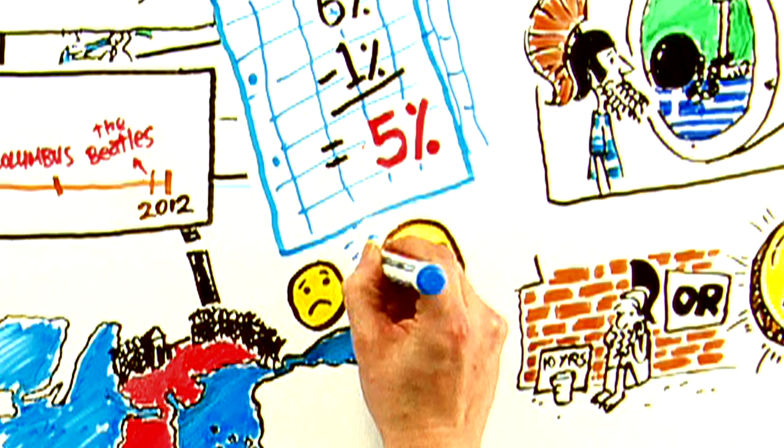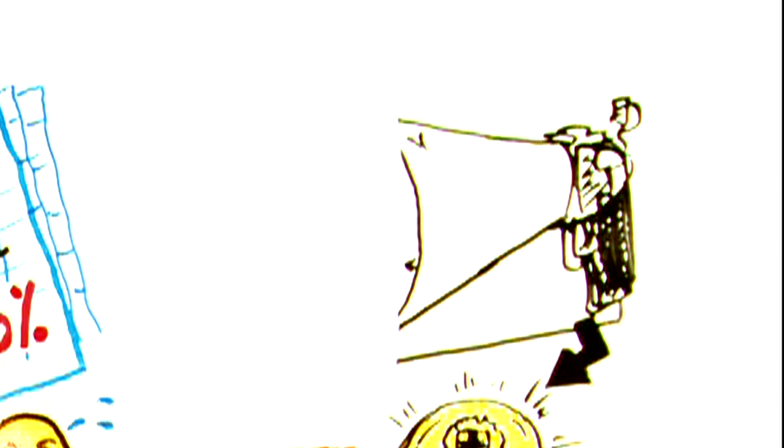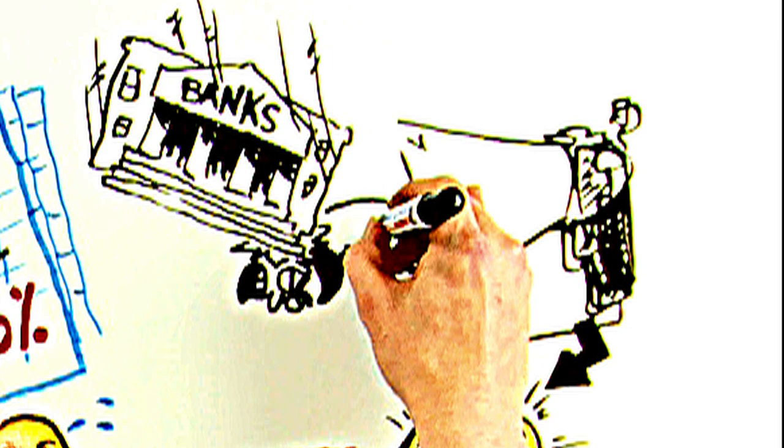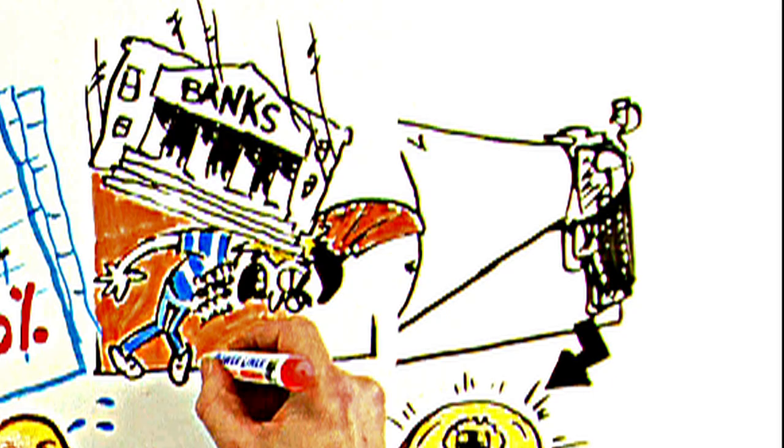So not only are the banks being bailed out, but they will now be used to bash the Greeks into submission. With this 1 trillion of cash sloshing around the banking system, the Germans are reassured that there is enough liquidity to withstand the shock of a Greek exit from the euro.